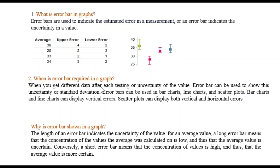It depends on what kind of experiment you are doing. Whenever you test multiple times and get different results each time, this is called the uncertainty of the value. You need to express this uncertainty in your graph — whether it is a bar chart, line chart, or scatter plot. This is also called standard error or standard deviation.